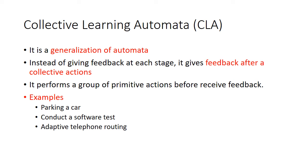For example, when you are parking a car, we need feedback based on a set of actions like moving the steering and applying pressure to the accelerator to move the wheels — so generally one combined action takes place. Another example is software testing: to test a program, for example to find the factorial of a number, we need to test the entire program or set of code instead of one line at a time. Another example is adaptive telephone routing or adaptive network routing, which can also use collective learning automata — that generalized form of learning automata.